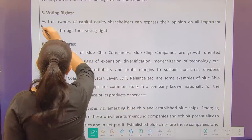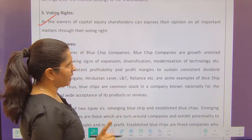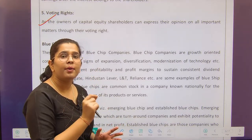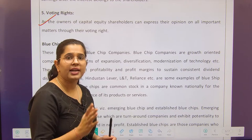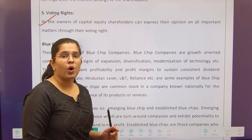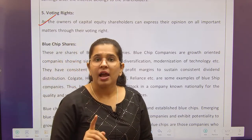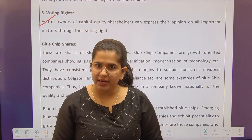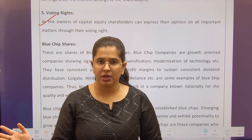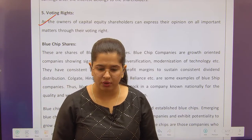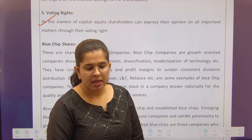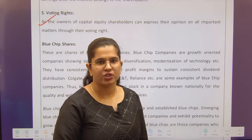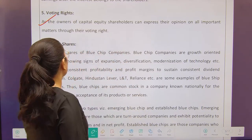Voting rights — only equity shareholders have voting rights. Preference shareholders do not have voting rights regarding the day-to-day business of the company. They have voting rights only when the matter involves their own interest. Debt securities like debentures and bonds also have no voting rights. Voting rights belong only to equity shareholders because they are the true owners of the company.